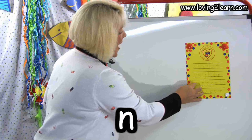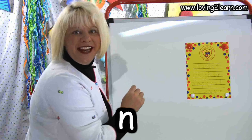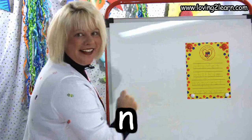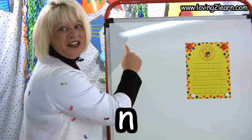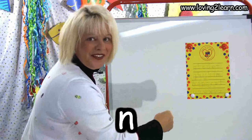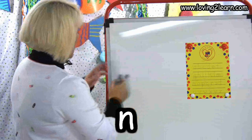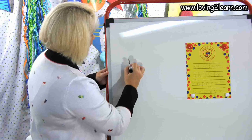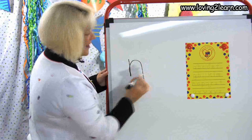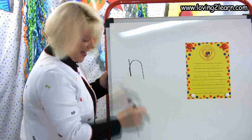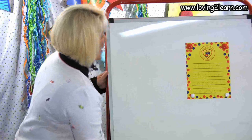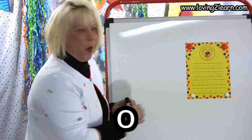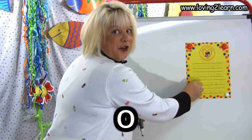The next letter is the letter N. Straight line down and around the hill. Do it with me in the air: straight line down and around the hill. We'll write it on the wipe-off board: straight line down and around the hill. There's the letter N.